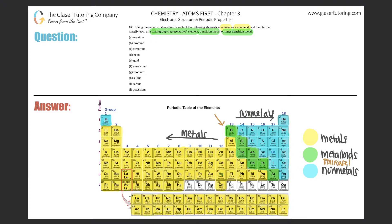Metals are shiny for the most part and are great conductors of electricity and heat. Non-metals, by contrast, are dull and don't conduct electricity well, and produce pretty much no heat. Metalloids have both properties of metals and non-metals — they're not great conductors but they're not terrible either. They conduct electricity and heat moderately well, so they can be placed in either category, hence they're classified as metalloids.